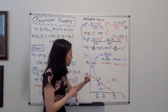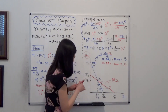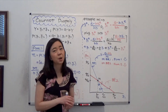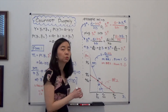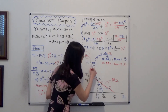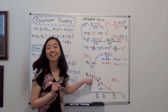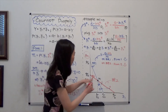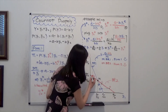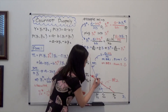What if we start at point 1 prime instead? At point 1 prime, firm 1 is happy but firm 2 is not. Firm 2 moves down to point 2 prime to reach its best response. Then firm 1 is not happy and moves to point 3 prime, and so on. But eventually, from any starting point, you will end up at point N, the mutual best response.